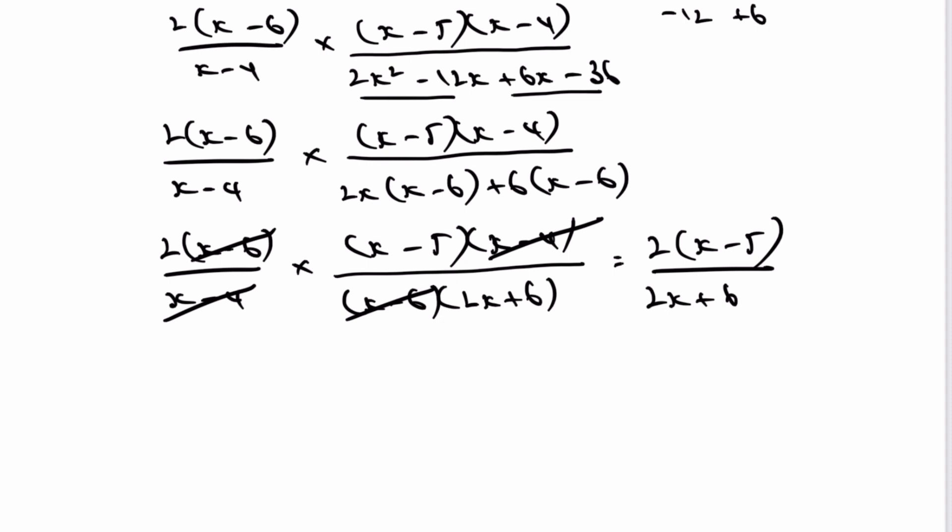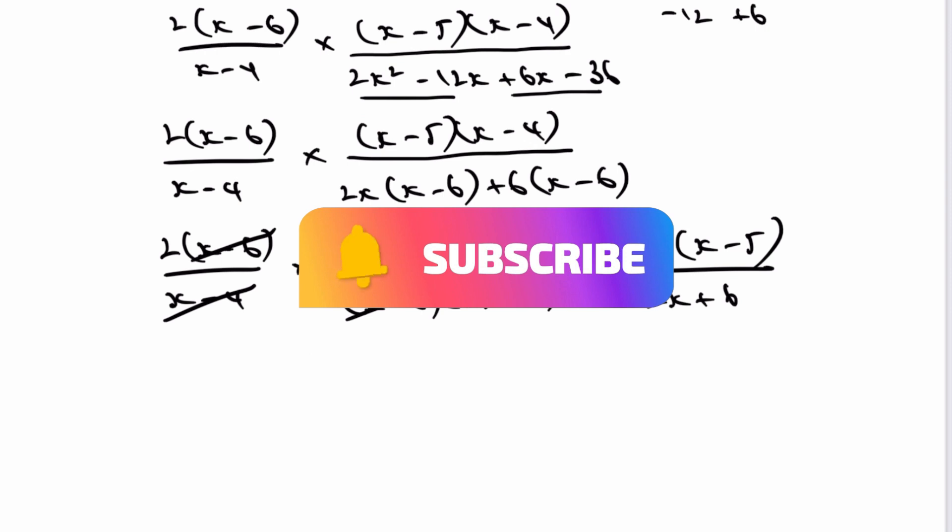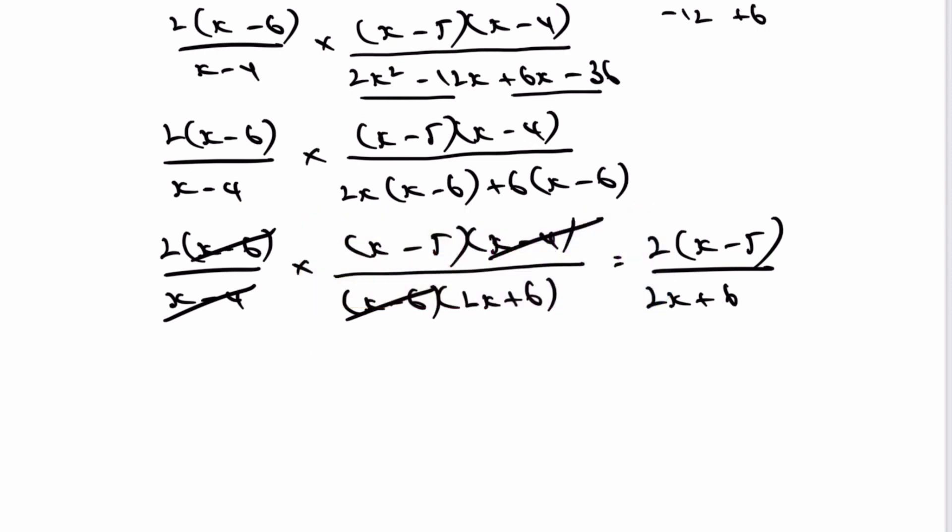Now, that would just about get you there, but you might recall right at the very beginning, it says simplify fully. So you might be able to spot that my denominator, I can actually factorise for 2.